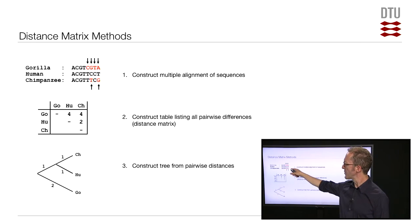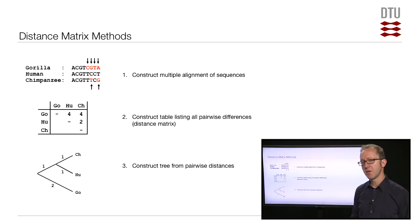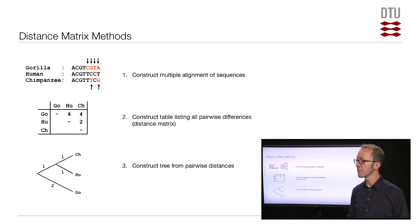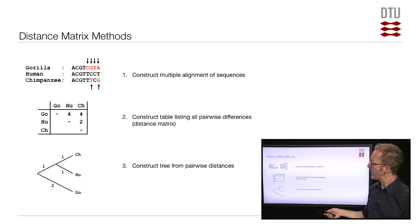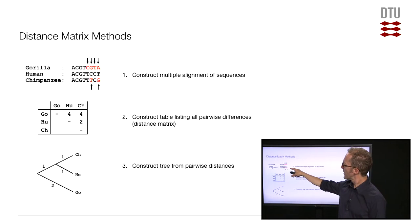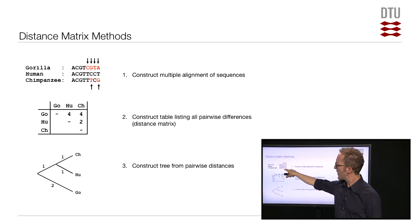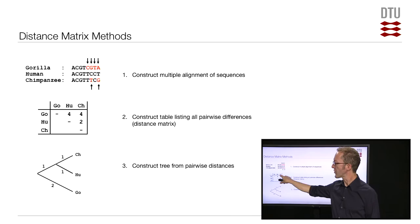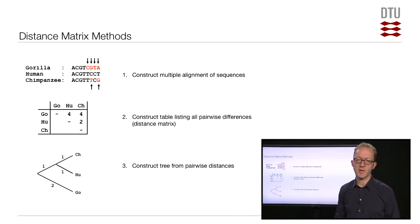If we compare human and chimp, you can see that there are two positions that differ, so for human and chimp we put the number two. Finally, chimp to gorilla — if you compare it again, you will see that there are four positions, the last four in the sequence, that differ. So gorilla to chimp also has a genetic distance of four.